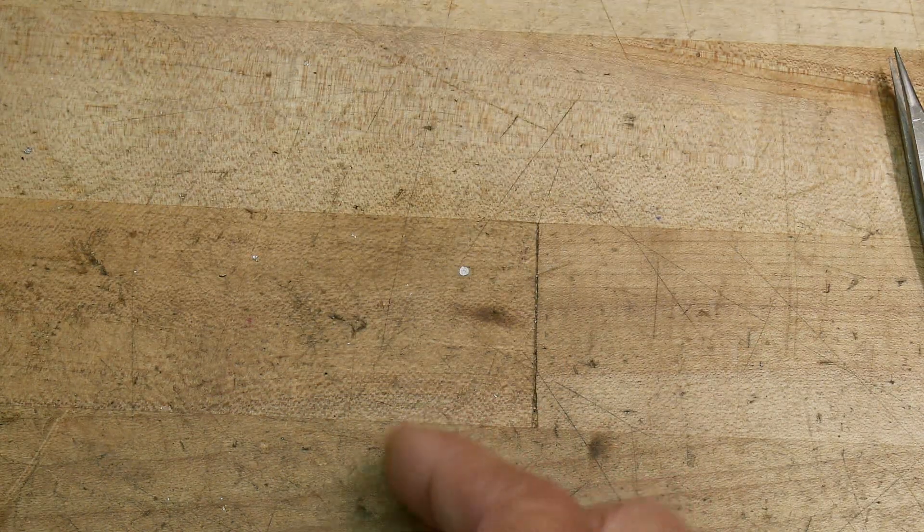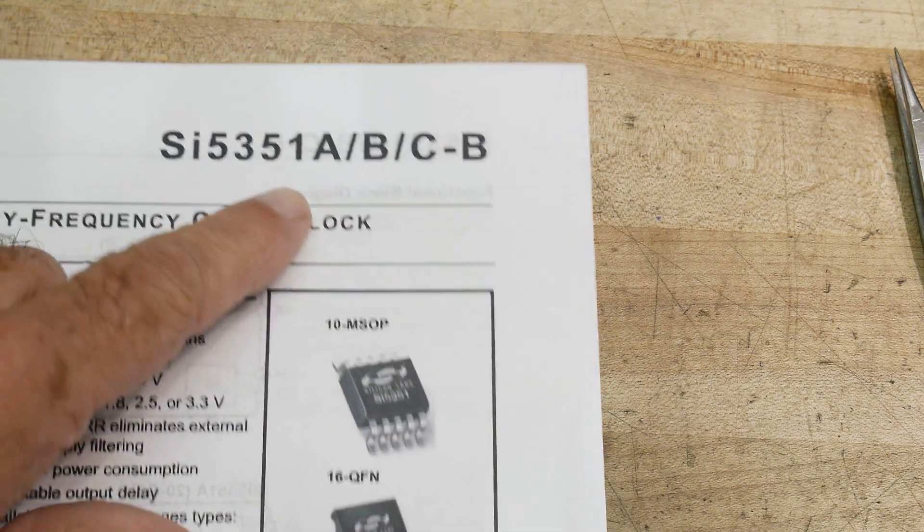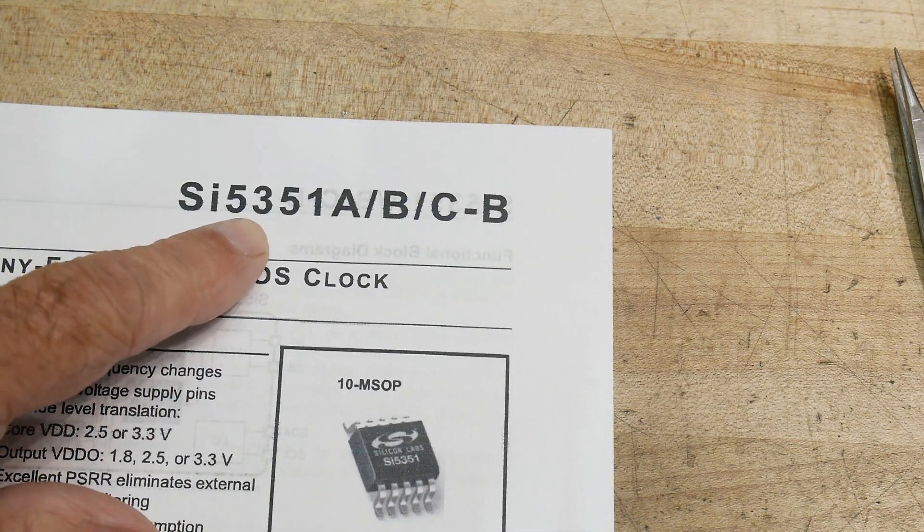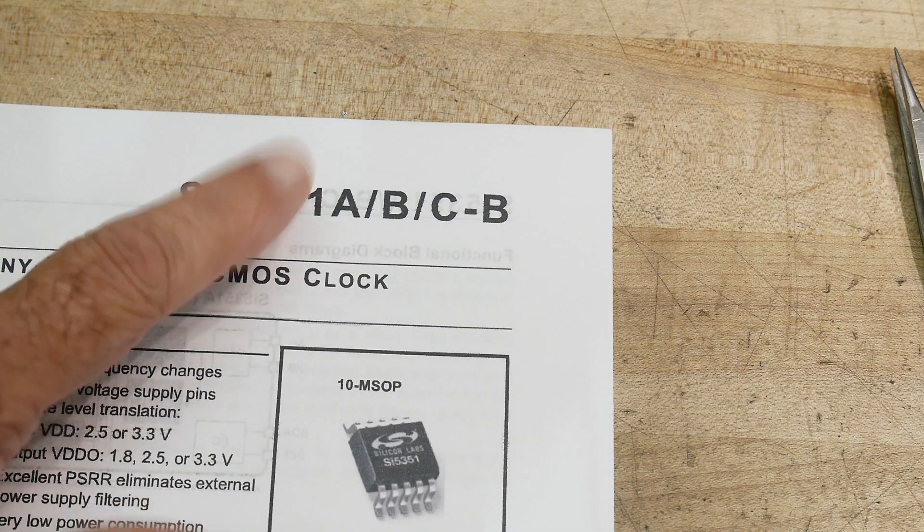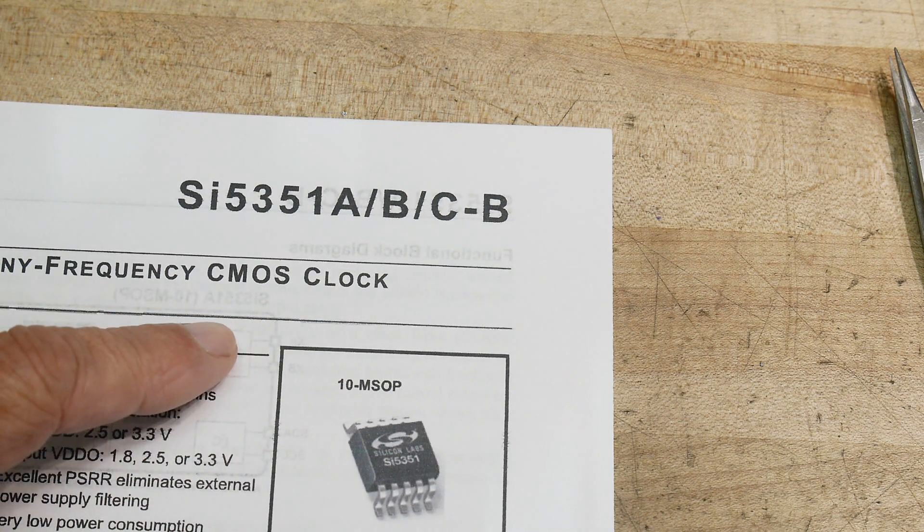So what is this chip? Well, this chip is a Si-5351. I believe this is the chip that's used in the NanoVNA.